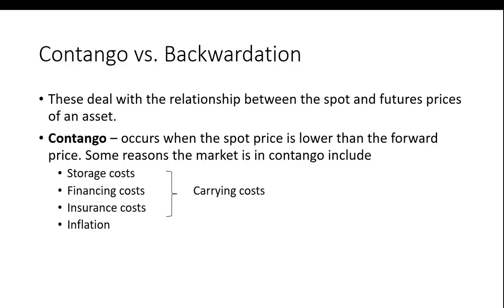If you've ever covered futures markets, you may have heard the terms contango and backwardation. I want to discuss that a little bit — we'll take a look at a couple of graphs and try to understand what they are and why they look like this. But what are they?